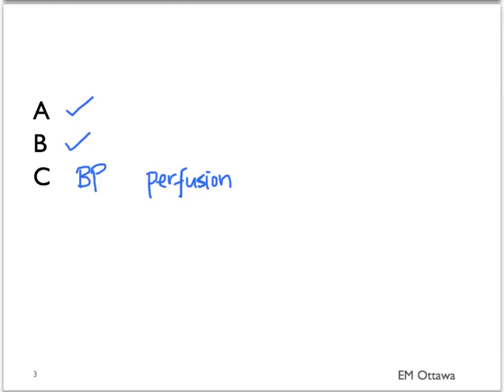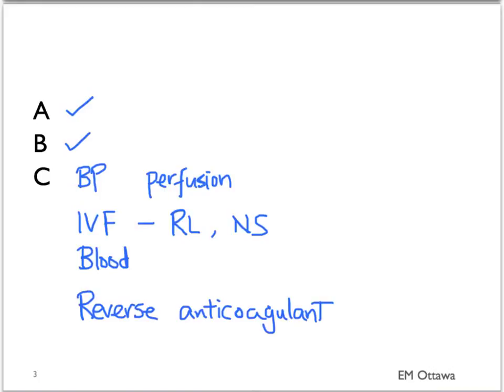We start resuscitation by using IV crystalloids such as Ringer's lactate or normal saline. In large amounts of bleeding, blood will often be given. If the patient is on an anticoagulant, we will also give reversal agents to reverse them. We often start with these empirical treatments until we know more about the patient's specific cause.